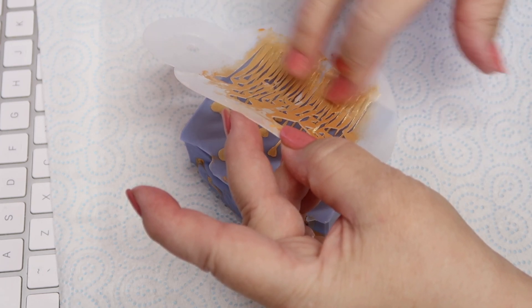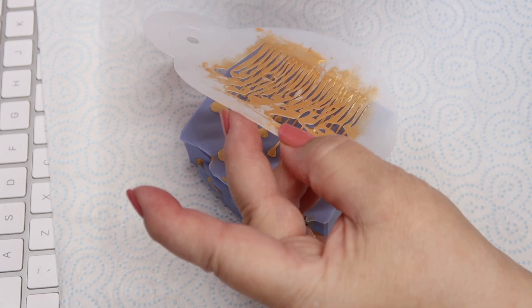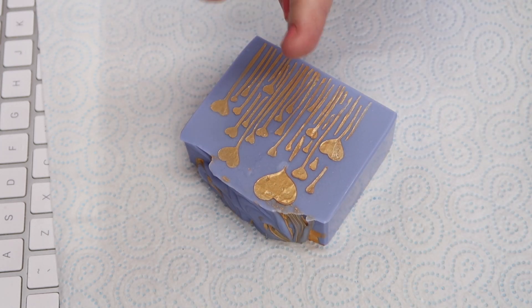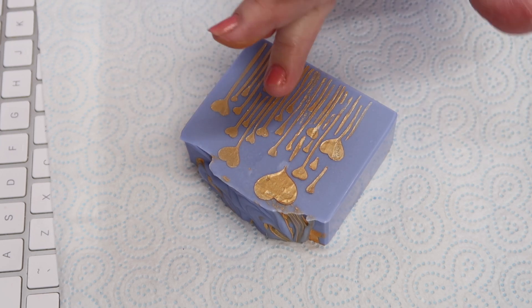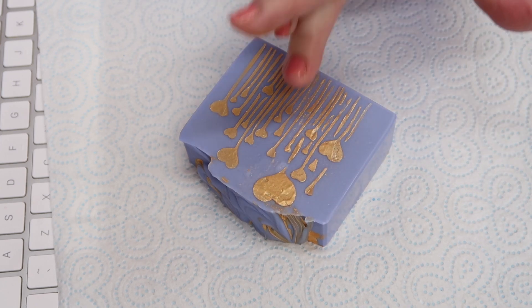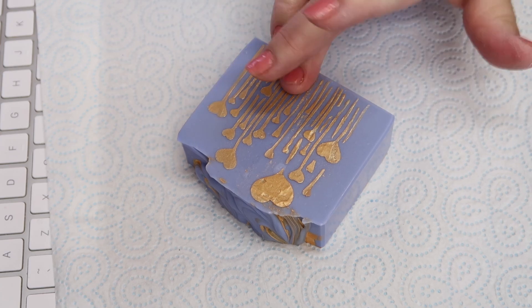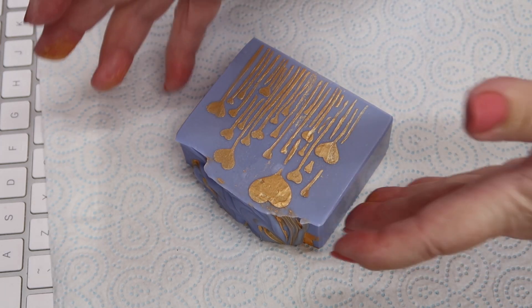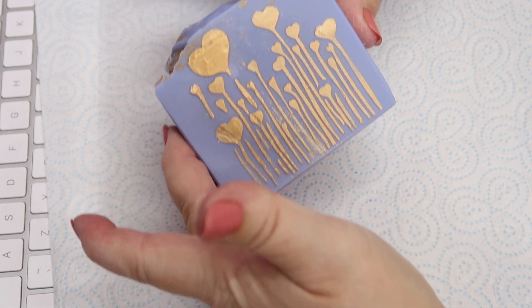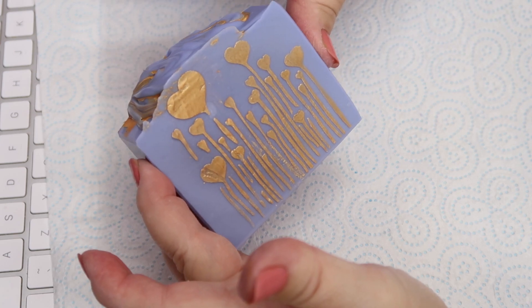And there we go. With a different finger, not the finger that's got the mica on it, with a different finger, a clean finger, just press all that down to make sure it sticks onto your bar of soap. And there we have a beautiful piece of angel skin cream silk soap.